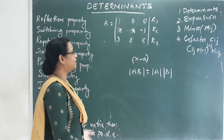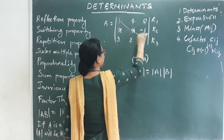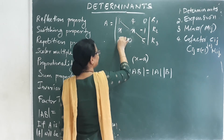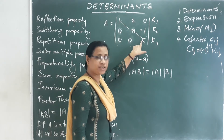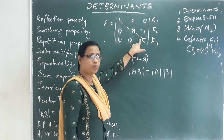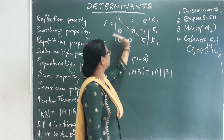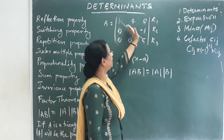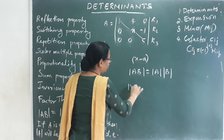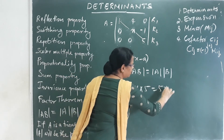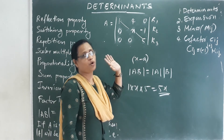The last property is the triangular matrix property. For a triangular matrix, the main diagonal elements above or below are zero. The determinant value equals the product of the main diagonal elements. For example, 1 times x times 5 gives 5x as the determinant value.